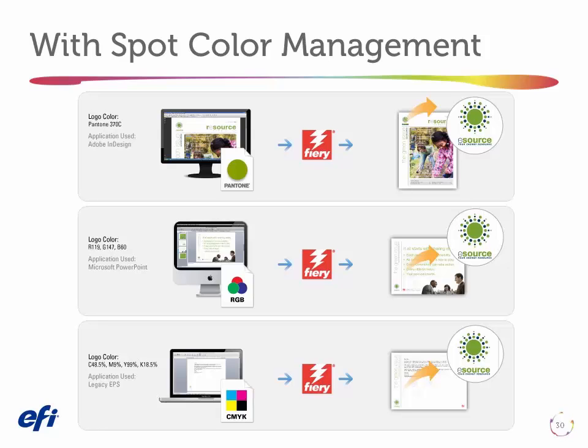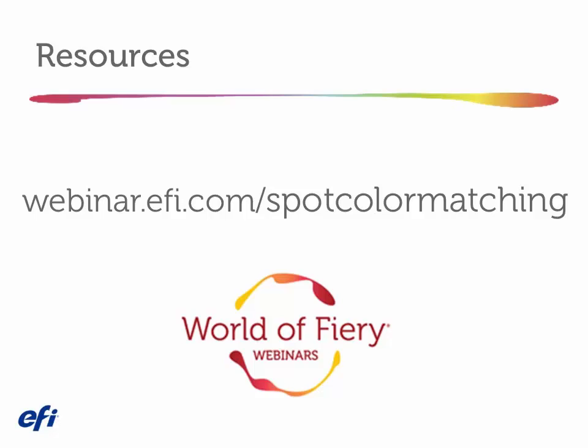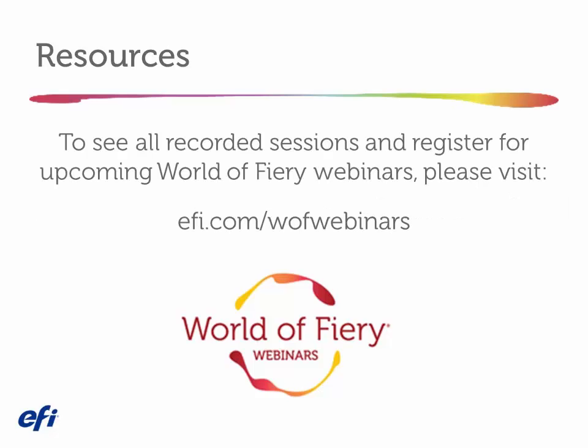For the third example, I use the same trick — one more substitute color in my spot color library, this time defined in CMYK with the percentages shown, mapped to the proper spot color values from the first case. This gives me a consistent match across all my pieces, whether it's a professional document with a Pantone color name, RGB from an office application, or CMYK from legacy files with EPS logos. Thank you for watching. For additional resources and e-learning classes on this topic, visit our website. To see all recorded sessions and register for upcoming World of Fiery webinars, please visit EFI.com/WOFwebinars.